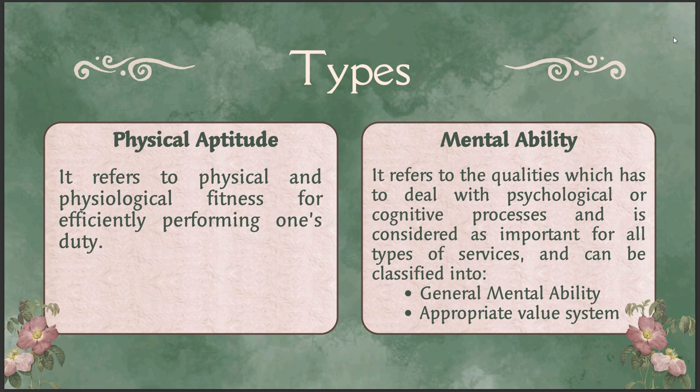The second type is mental ability — it refers to qualities that deal with psychological or cognitive processes and is important for all types of services. It can be classified into general mental ability, which brings the basic thinking capacity needed for intellectual tasks, upon which other components of aptitude depend. If you do not train your general mental ability, your aptitude does not work well. But when you train your general mental ability, your aptitude grows, and when you work on your aptitude more, it does amazing things.